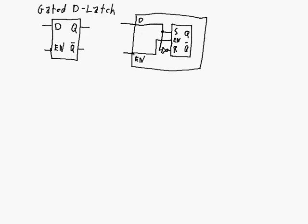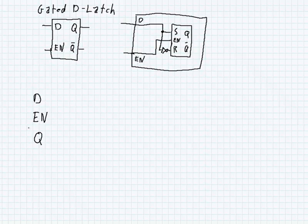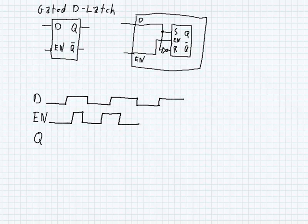That setting and resetting only occurs if my enable is a 1. Here's a timing diagram example of what happens in this gated D-latch. I've got my D, my enable, and I'm just going to deal with Q, because Q-bar is going to be the exact opposite of Q. The basic idea is that if enable is high, the value of D is going to get passed into Q. If enable is low, Q is going to just stay at whatever value it was.